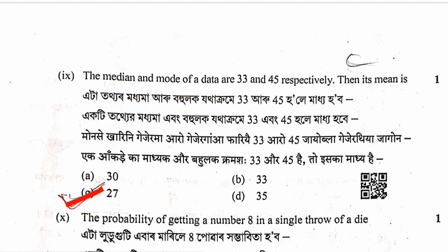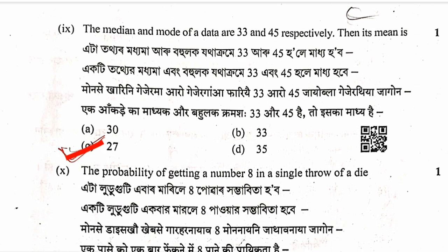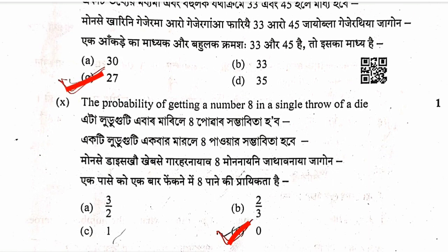Question 10: The median and mode of data are 33.3 and 45 respectively, then find the mean. Using the empirical formula: 3 median equals mode plus 2 mean. Substituting values gives mean equals 27. Option B is correct.